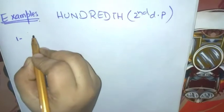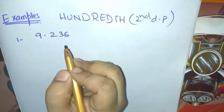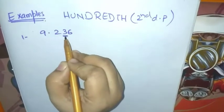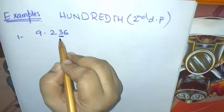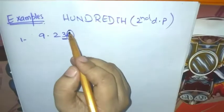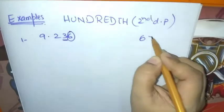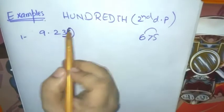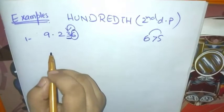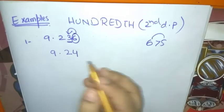Now we move to the second decimal place. We take an example: 99.236. Because this is the second decimal place, step one is to underline this digit where we have to round off the number, and the next digit we circle. We see this number is greater than 5, so we add 1 to this digit, and the number after rounding becomes 99.24.